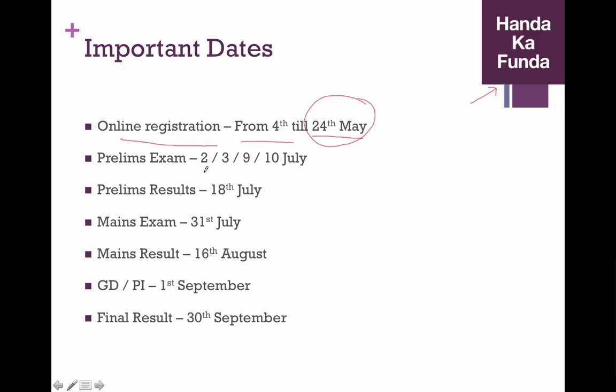The prelims exam will be conducted on 4 dates, 2nd, 3rd, 9th and 10th of July. The prelims results will be declared very quickly as you can see, just in a gap of 7 days on the 18th of July and on the 31st of July, there will be the mains exam and that's the key differentiator here.